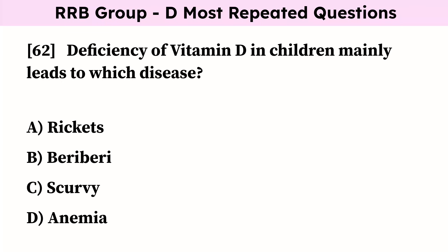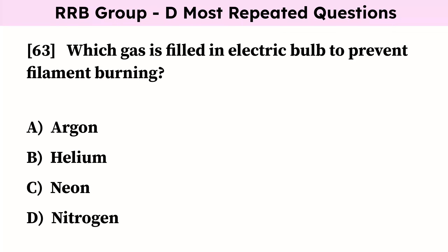Deficiency of vitamin D in children mainly leads to which disease? Correct answer is rickets. Which gas is filled in electric bulbs to prevent filament burning? Correct answer is argon.